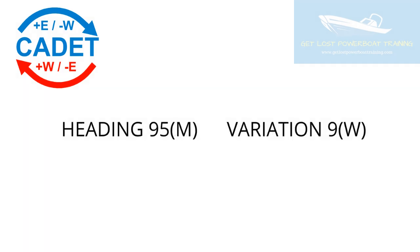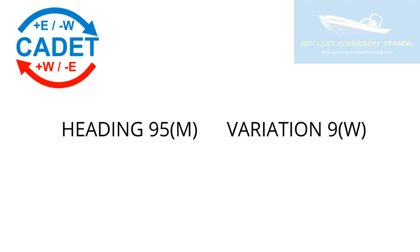Here's another example. The heading is 95 degrees magnetic and the variation is 9 degrees to the west. Looking at the CADET picture, I'm going from compass to true, so I'm going to take away west. 95 degrees minus 9 degrees westerly variation gives me a true heading of 86 degrees.